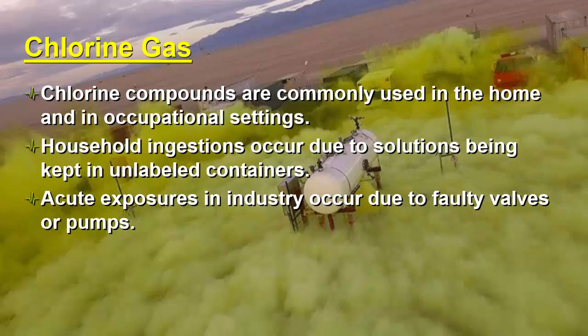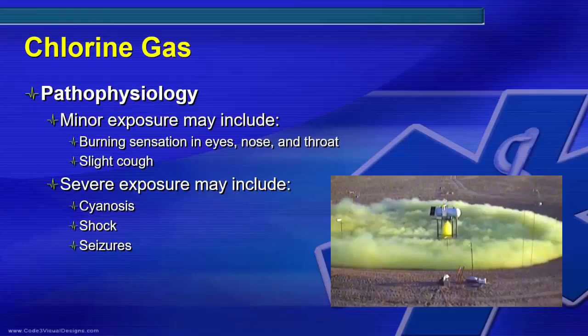Chlorine gas. Chlorine compounds are commonly used in the home and in occupational settings. Household ingestions can occur if chlorine-containing solutions are kept in unlabeled containers. Acute exposures are often caused by faulty industrial valves or pumps that dump large amounts of gas into the environment, possibly exposing many people. Leakage from an industrial storage tank, truck, or rail car can result in mass casualty incidents. Minor exposure may include burning in the eyes, nose and throat, and a slight cough, whereas severe exposure may include cyanosis, shock, and even seizures.